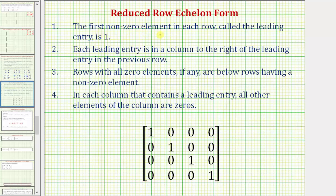Number one, the first non-zero element in each row, called the leading entry, must be a one. Two, each leading entry, or one, is in a column to the right of the leading entry in the previous row. Three, rows with all zero elements, if any, are below rows having a non-zero element. And finally, four, in each column that contains a leading entry, all other elements in the column are zeros.